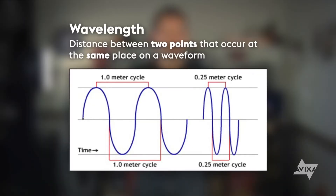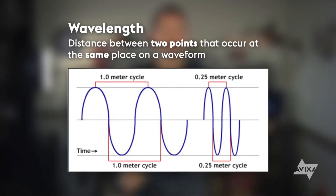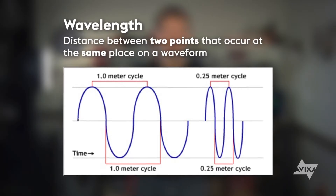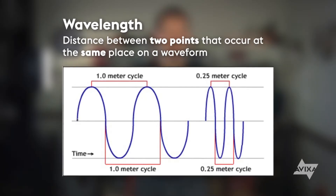Wavelength is the physical distance between two points exactly one cycle apart in a waveform. Wavelength measures the distance between two points that occur at the same place. Parts of the wave above the reference level, or zero, represent the molecules being compressed. We call that compression. Maximum compression occurs at the top of the waveform, or at the wave's peak.